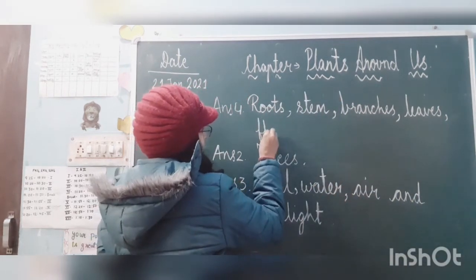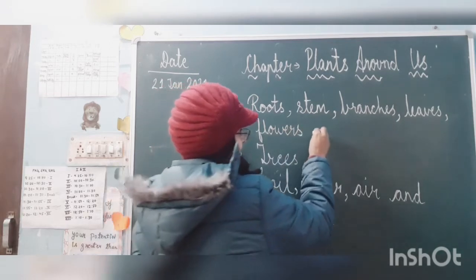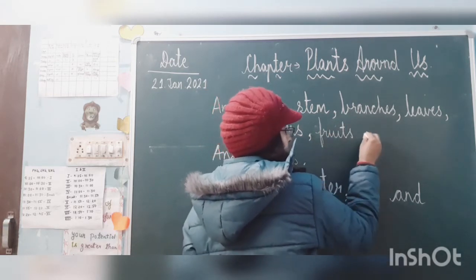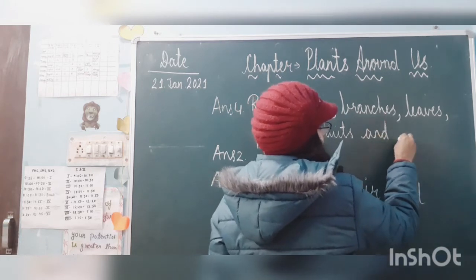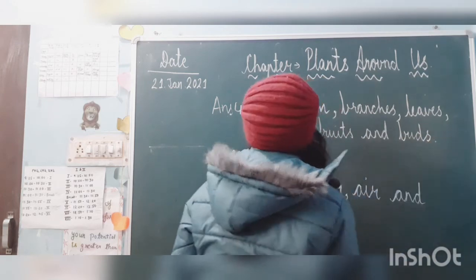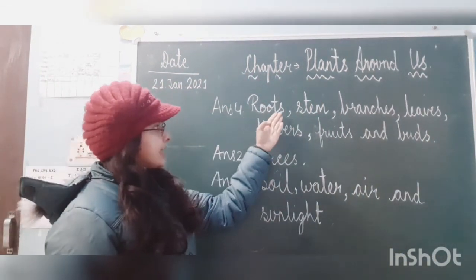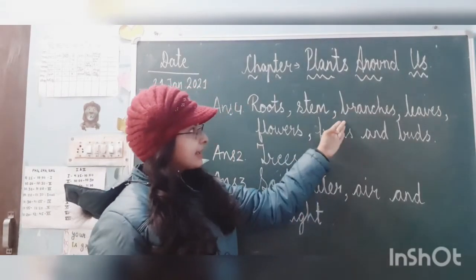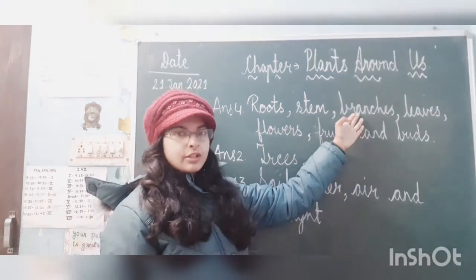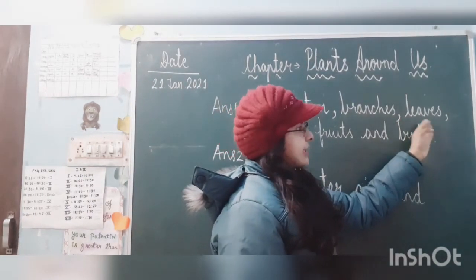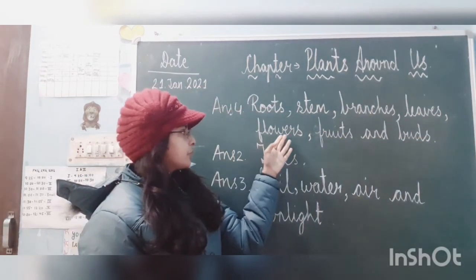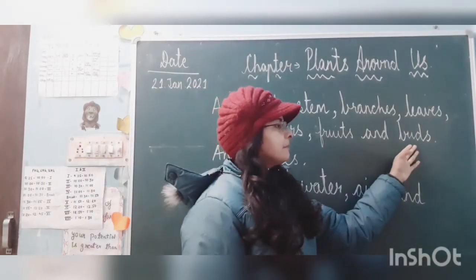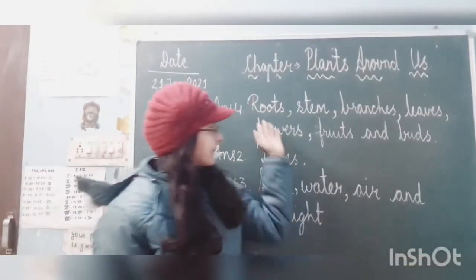Then flowers — F-L-O-W-E-R-S. Then fruits — F-R-U-I-T-S. Fruits can be fruits or vegetables. And one more: buds — B-U-D-S. Buds are your flower buds. So the parts of a plant are: roots, stem, branches, leaves, flowers, fruits, and buds.